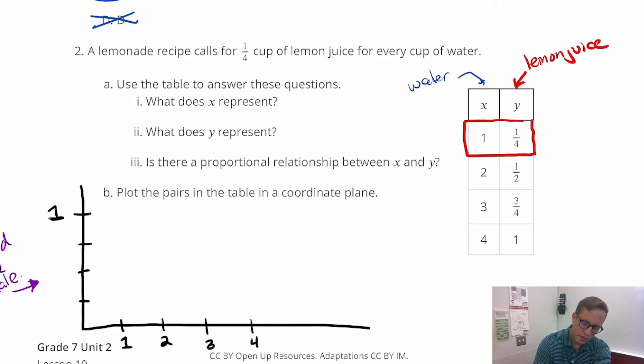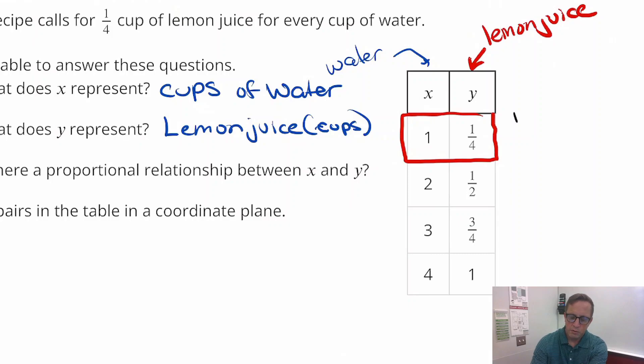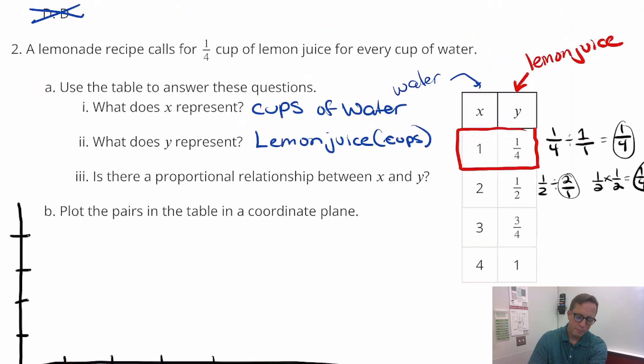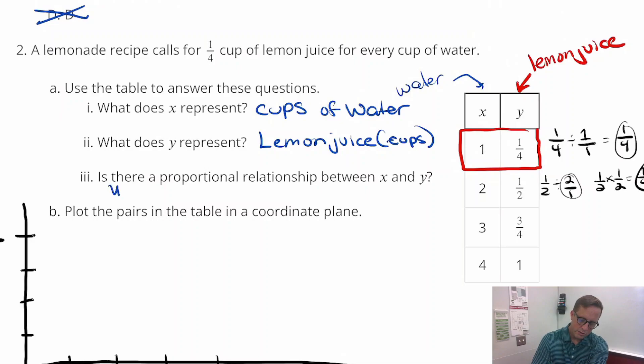I'm going to go ahead and fill that out. Is there a proportional relationship between X and Y? Yeah, there certainly is. There is a proportional relationship and it's very easy. You can do one-fourth divided by one and you get one-fourth. If you keep change flip, you do one-half divided by two. I'm going to flip this, so I get one-half times one-half, which is one-fourth. Every time you're going to get one-fourth.